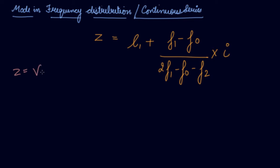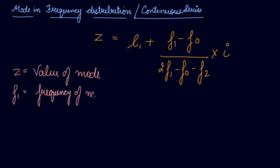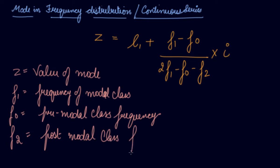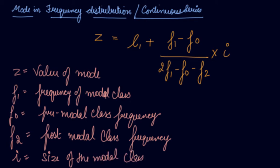Z is the value of the mode. F1 is the frequency of the modal class. F0 is the pre-modal frequency, or the frequency preceding the modal class. F2 is the post-modal class frequency, or frequency succeeding the modal class. i is the size of the modal class. This is the method used for calculating the mode in the continuous series or frequency distribution series.